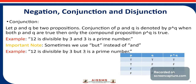Please note one important point: sometimes we use 'but' instead of 'and'. For example: 12 is divisible by 3, but 3 is a prime number. For the sake of reference, here is the truth table for P and Q. When P is true and Q is true, P and Q is true. When P is true and Q is false, P and Q is false. When P is false and Q is true, P and Q is false. When P is false and Q is false, P and Q is false. That means when both P and Q are true, then only the compound proposition P and Q is true.